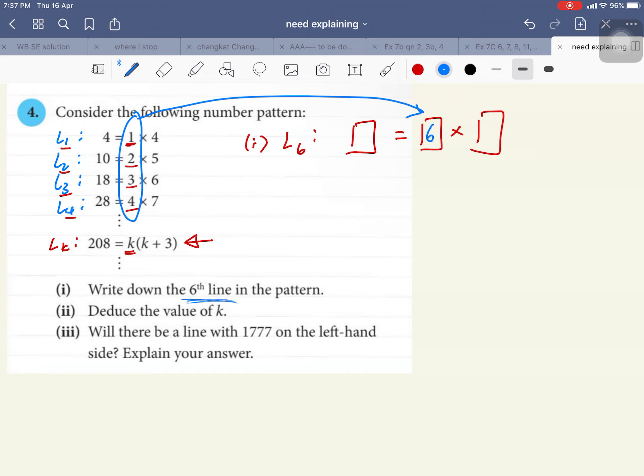How about the second product? The second product is always 3 more. The second product is always 3 more than these numbers here. Okay, so if this is 6, this number will be 9. Okay, so 6 times 9 will give you 54. So, this is your line 6. 54 equals to 6 times 9.